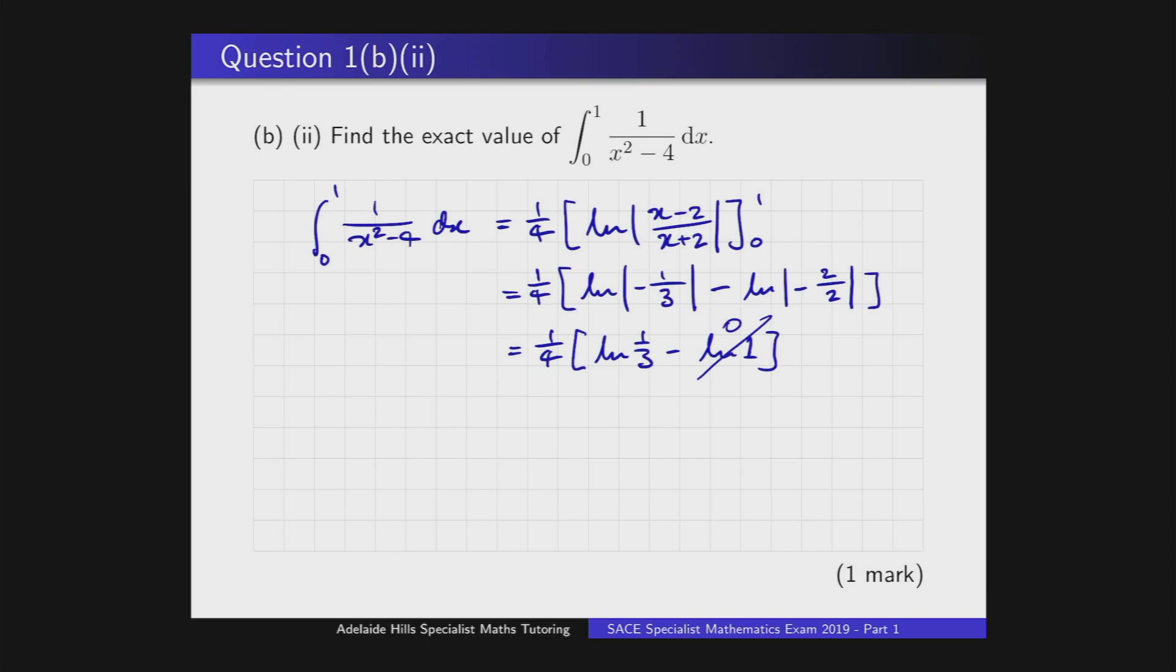So that gets rid of the second term there, and with the first term we can simplify that slightly because a third is equal to three to the minus one. Okay, so we can write this as ln of three to the minus one, and we can take that minus one outside, so we get minus a quarter ln three. That's another property of the log function. Okay, and so that's the exact answer for that log. You can't get it any more exact than that. The natural log of the number three is not going to be something you can write down exactly—it's going to be an infinite string of decimal digits, so we'll just leave it in that form there.